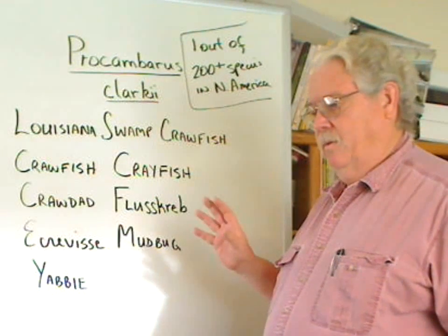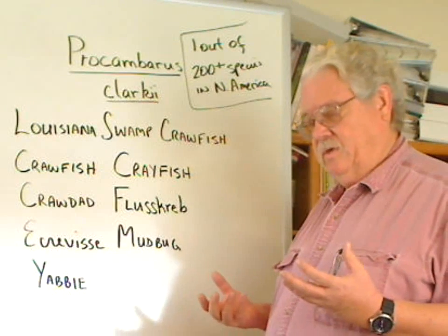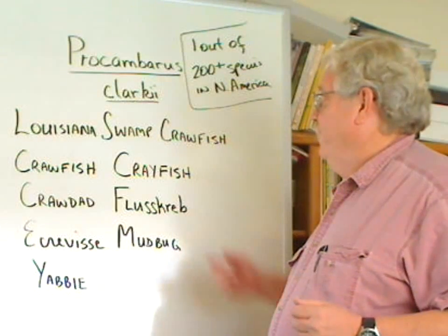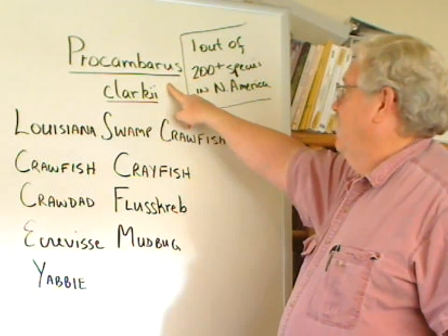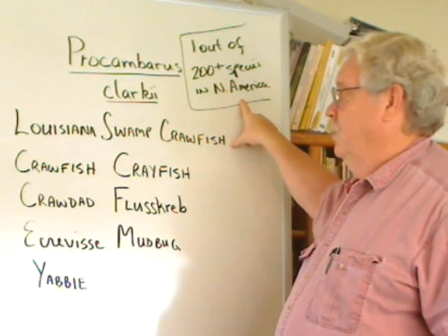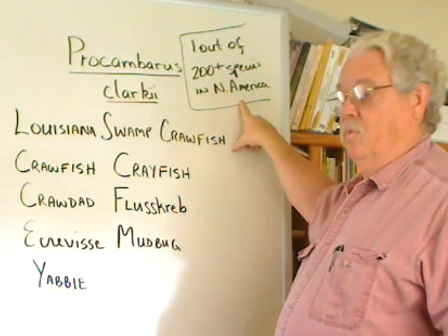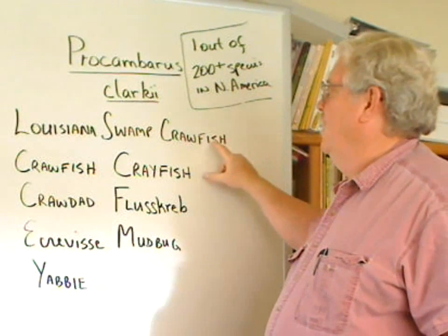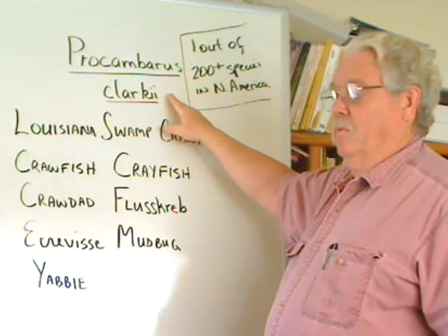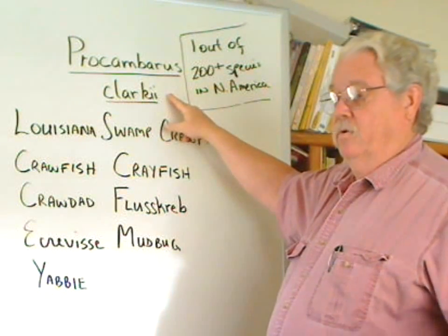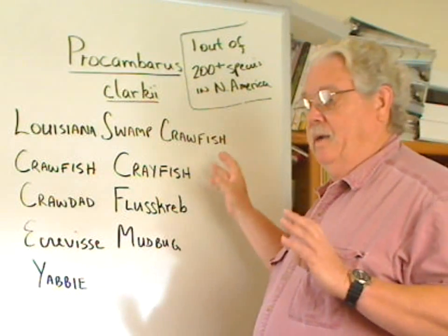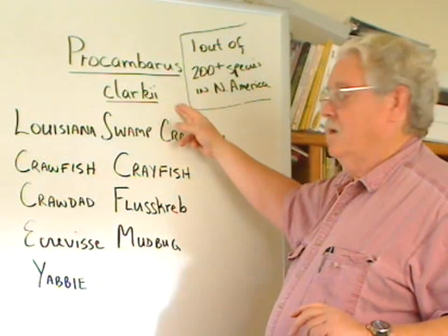Now, there's a couple of problems, and again, this emphasizes the importance of scientific naming in Latin. This is just one species of crawfish of over 200 species that are in North and Central America. There are many more species worldwide, but we know exactly which one we're talking about with this name, and it doesn't matter whether we're here or we're in Japan or China or some country in Africa. Anybody dealing with this species is dealing with Procambarus clarkii.